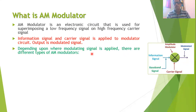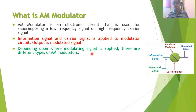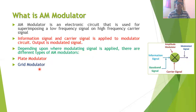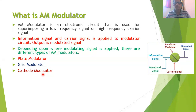Depending upon where you apply the modulating signal, there are different types of AM modulators. In AM modulators, you can use either vacuum tubes or transistors as the active device. For vacuum tube-based modulators: if the modulating signal is applied to the plate terminal of the tube, it is called a plate modulator; if applied to the grid terminal, it is called a grid modulator; and if applied to the cathode terminal, it is called a cathode modulator.